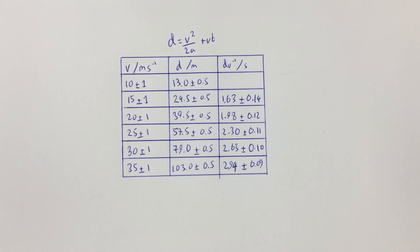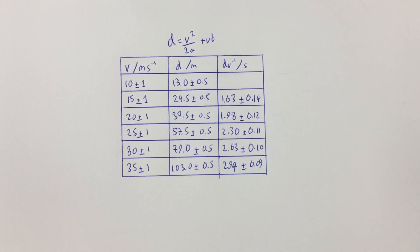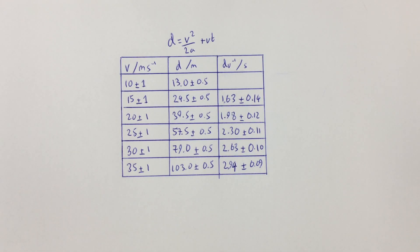This video is looking at how we deal with uncertainties related to graphs. By the end of this you need to understand how to calculate the percentage uncertainty in a gradient, how to calculate the percentage uncertainty in a y-intercept, and how to use those in conjunction with the equation y equals mx plus c.